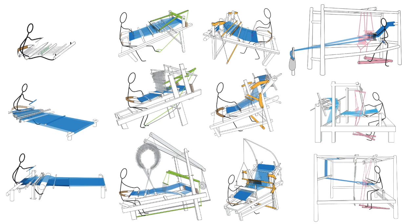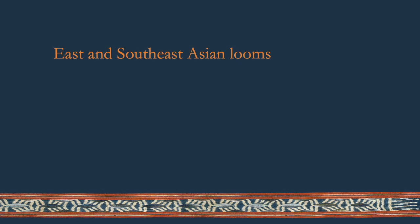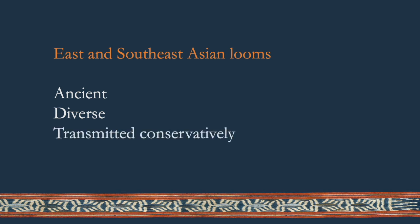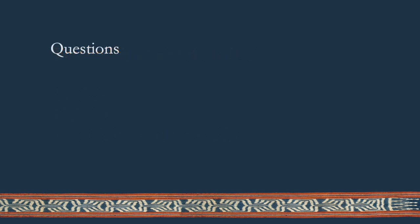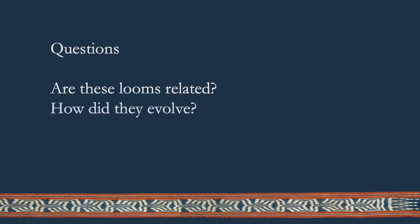The conclusions from looking at the archaeology of these looms and their cultural transmission processes is that they are ancient, diverse, and transmitted very conservatively. So they're worth looking at more closely to see if we can uncover the detailed lineages of these inventions. The two most basic questions that we want to answer are: are these looms really related, and how did they evolve?